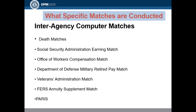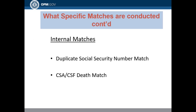The interagency computer matches we conduct include a yearly death match, the Social Security Administration earnings match, the OWCP match (pending signing of an MOU), the Department of Defense military retirement pay match, the Veterans Administration match, the FERS annuity supplement match conducted yearly, the PARIS match — which is an ongoing match with public assistance — and the duplicate social security number match. We also conduct the CSA-CSF death match.